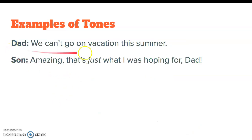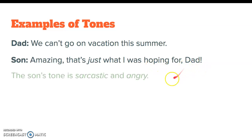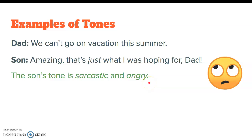Let's take a look at this next example. The dad says: we can't go on vacation this summer. And the son says: amazing, that's just what I was hoping for, dad. When the dad says can't go on vacation, that's not usually seen as a good thing. It might be confusing then as to why the son responds with all these positive words — amazing, that's just what I was hoping for, with an exclamation point. But we have to realize the son is probably going to react like a normal person would. So this amazing, that's just what I was hoping for is probably sarcasm and anger — I can pretty easily imagine the son rolling his eyes at his dad.